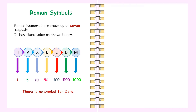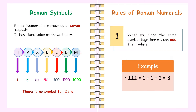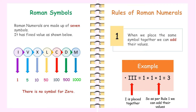Now let's learn the rules of Roman numerals. There are certain rules which help us write them. Rule 1: When we place the same symbol together, we can add their values. For example, 3 in Roman can be written as III. Here I is placed together, so as per Rule 1, we add their values: 1 plus 1 plus 1 equals 3.